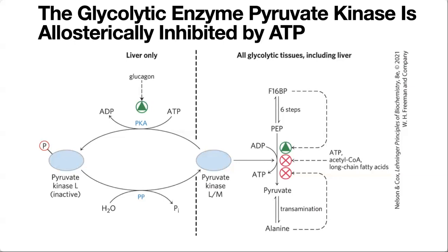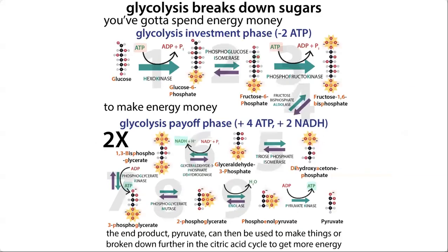Pyruvate kinase also gets positively regulated by F1,6-BP — one of the products of glycolysis. Up in the pathway, F1,6-BP is made and it activates the kinase at the very end. Why does this make sense? Because F1,6-BP represents the committed step — if we're pumping a bunch of stuff into this pathway, the message goes forward: get ready, pyruvate kinase, there's a lot of stuff coming your way. That's why you get positive feedforward from earlier in the pathway as well as negative feedback from later products.